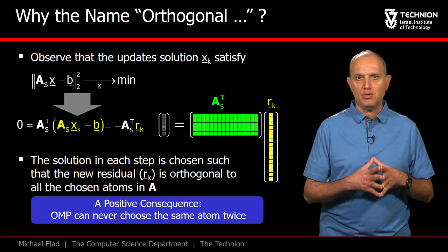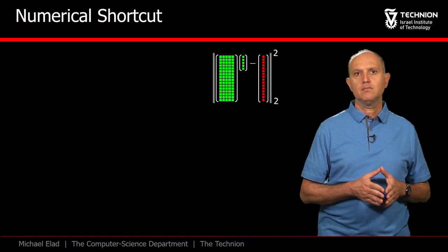This orthogonality is an asset, because it implies that once an atom has been chosen, it will never be chosen again, since its inner product with a residual is zero.